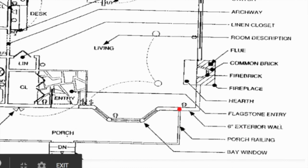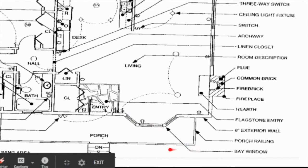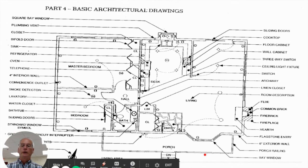Exterior wall — two lines running parallel to each other. Typically in Maine, an exterior wall is going to be six inches, although there are other construction techniques that allow you to have wider, thicker walls. Porch railing — this is the porch on the front of the house; two lines running parallel but closer together would be the railing. And then an angled bay window sticking out on the front of the house.